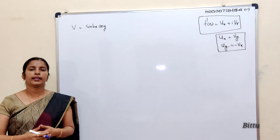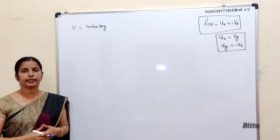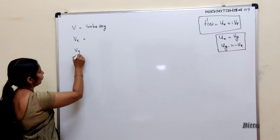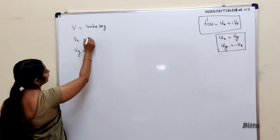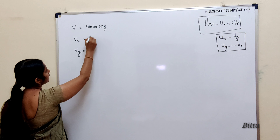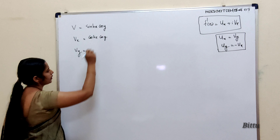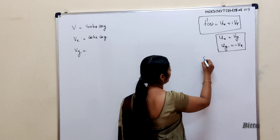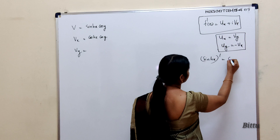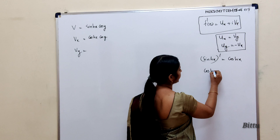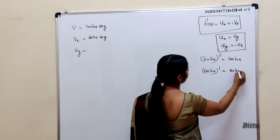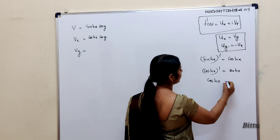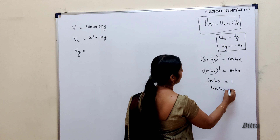Next question: find an analytic function whose imaginary part is sinh(x)cos(y). Here v is given, so find ∂v/∂x and ∂v/∂y. Now ∂v/∂x = cosh(x)·cos(y), since the derivative of sinh(x) is cosh(x). For hyperbolic functions: derivative of sinh(x) is cosh(x), and derivative of cosh(x) is sinh(x) — there is no negative sign. Also note: cosh(0) = 1 and sinh(0) = 0.